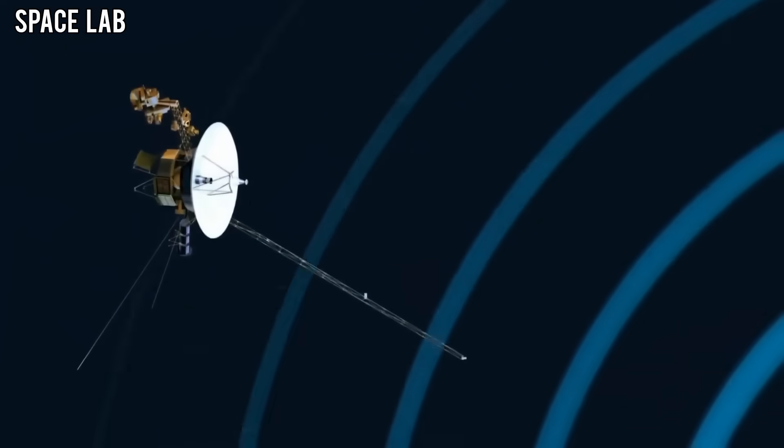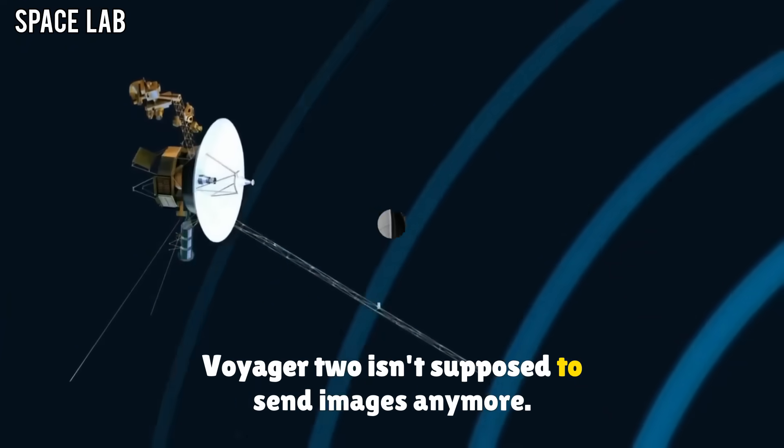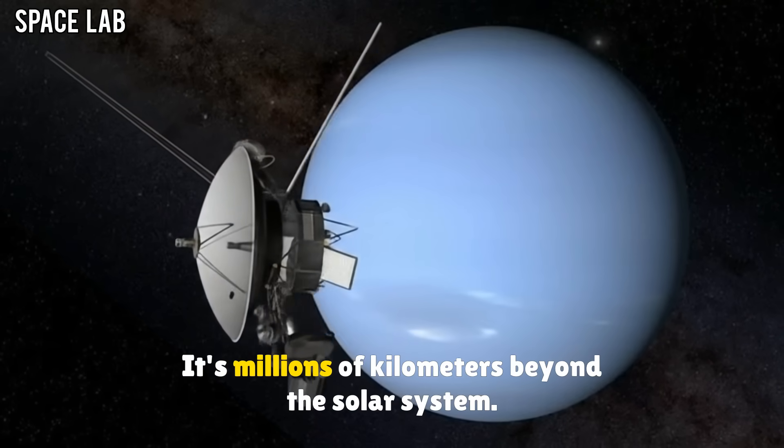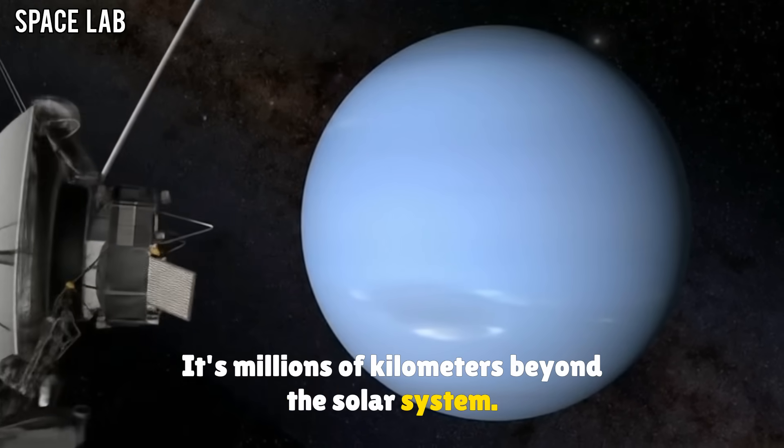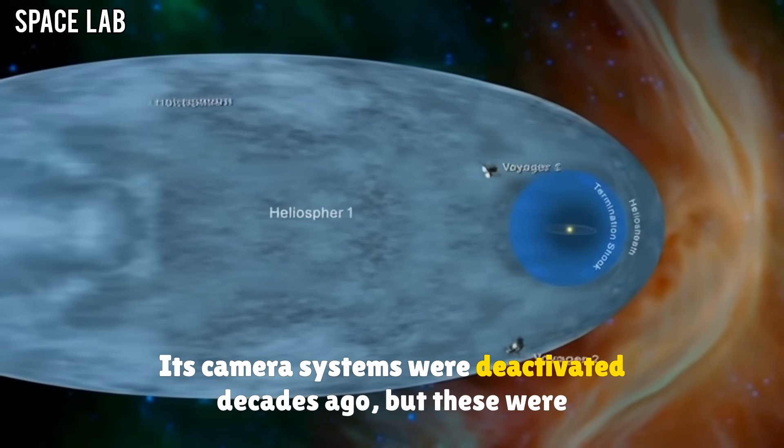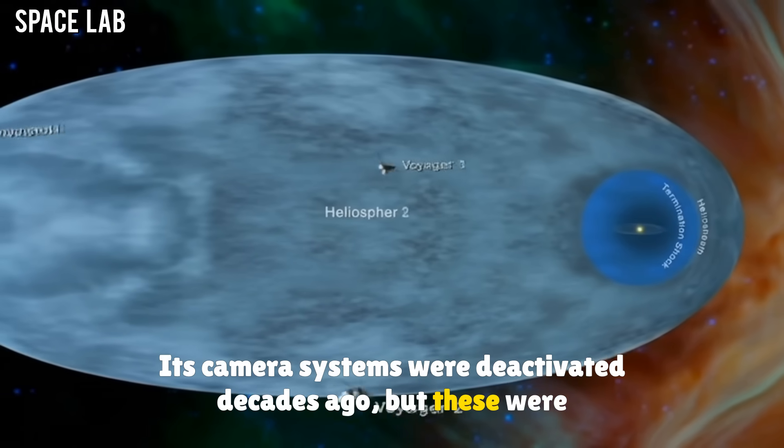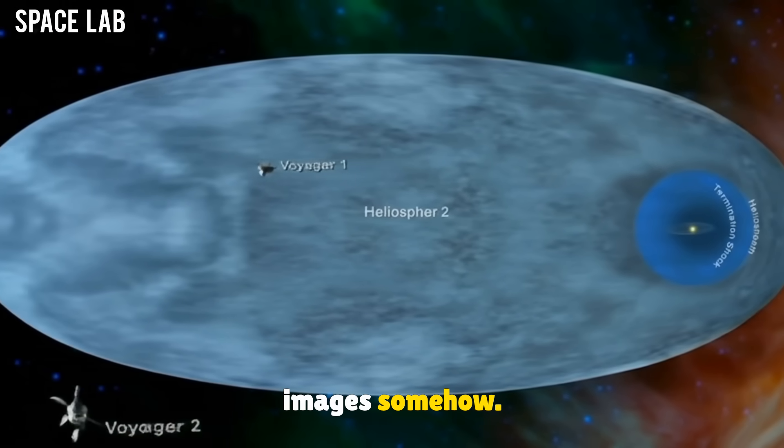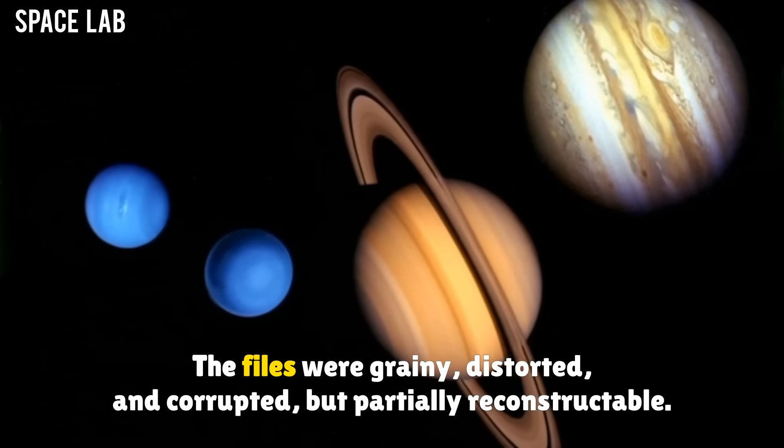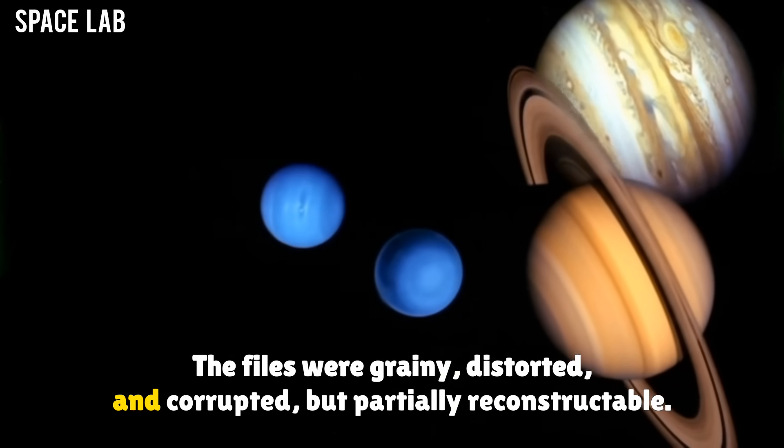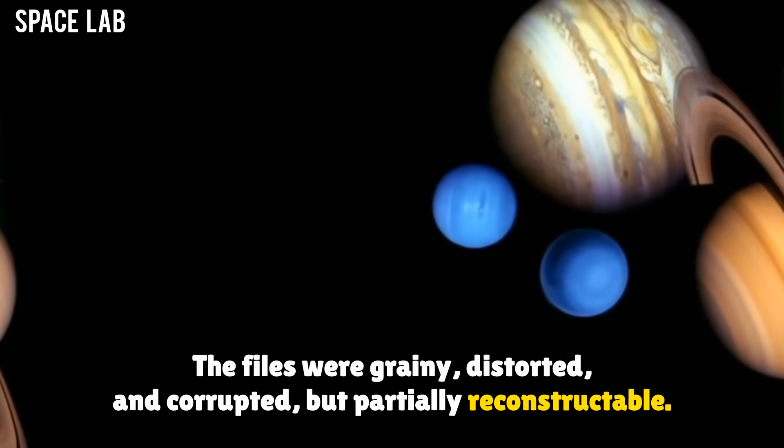How? Voyager 2 isn't supposed to send images anymore. It's millions of kilometers beyond the solar system. Its camera systems were deactivated decades ago. But these were images, somehow. The files were grainy, distorted, and corrupted, but partially reconstructable.